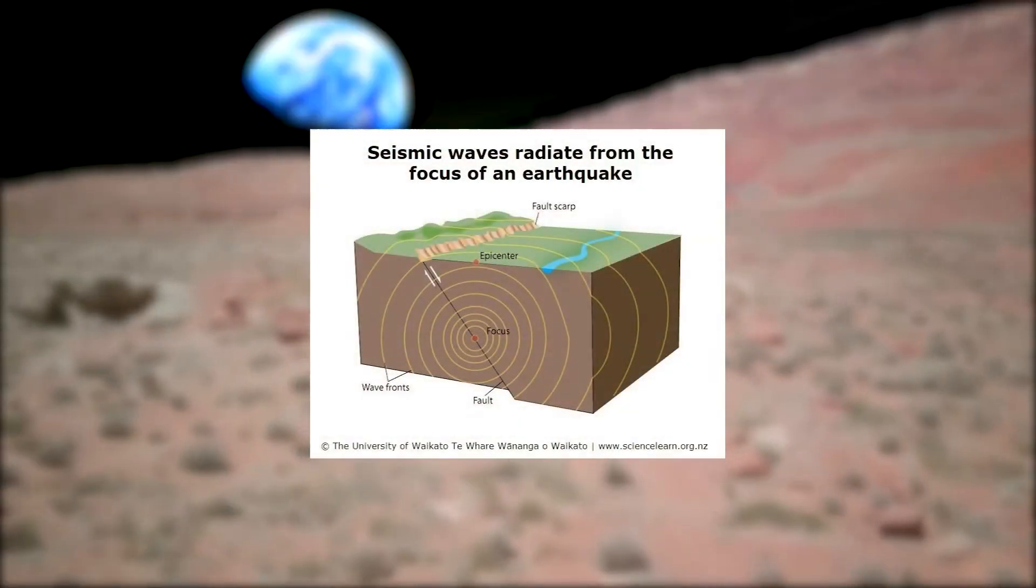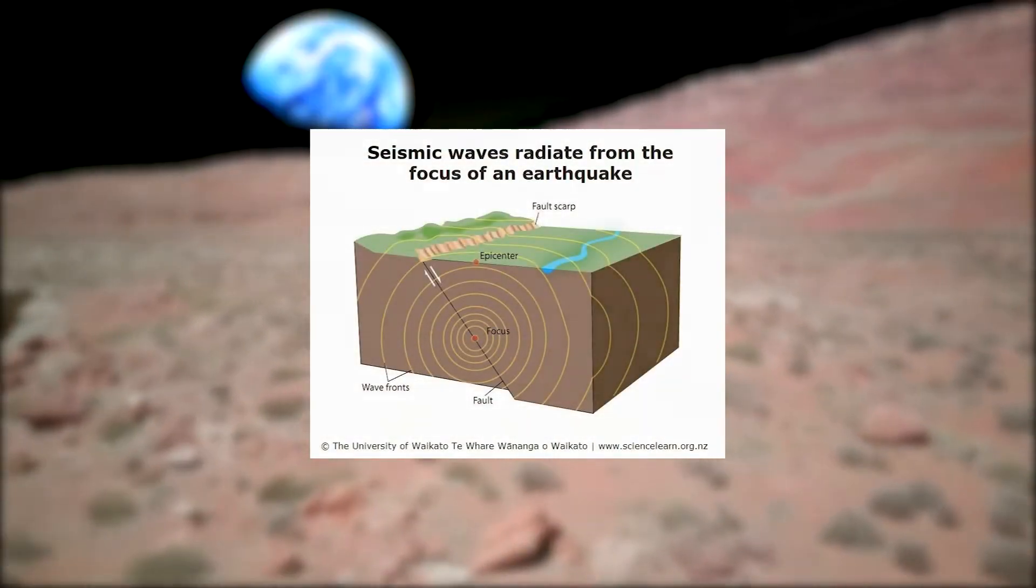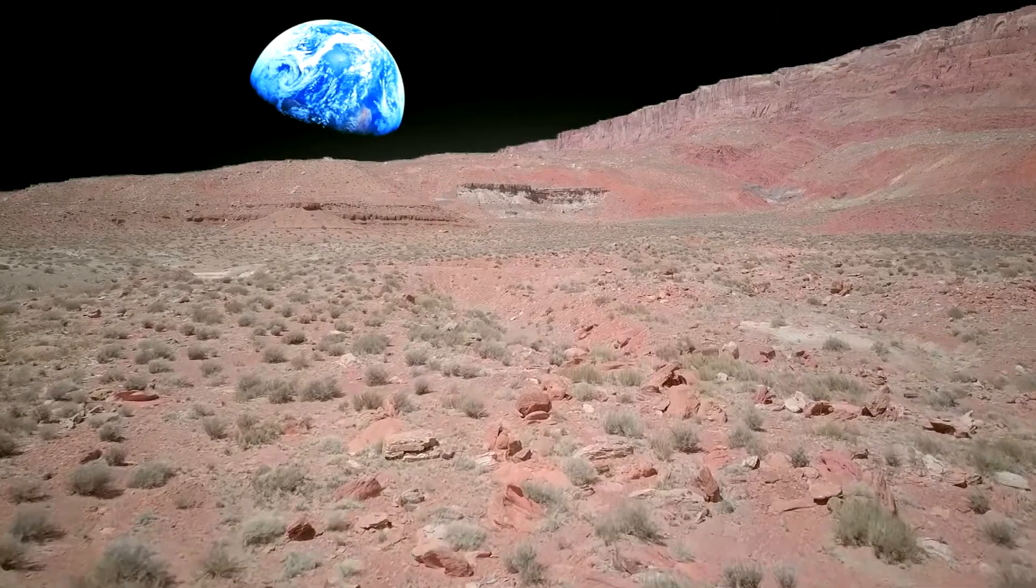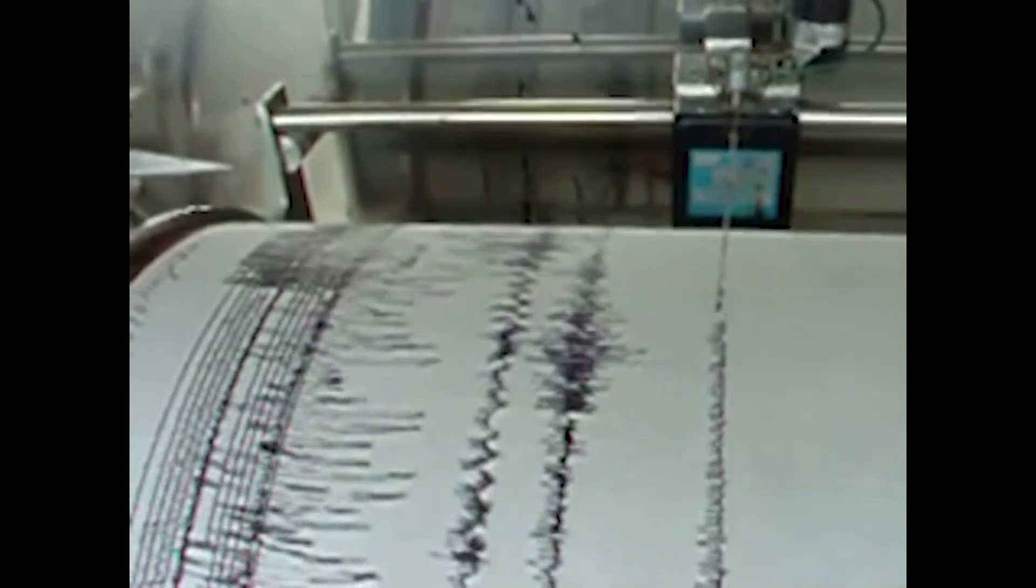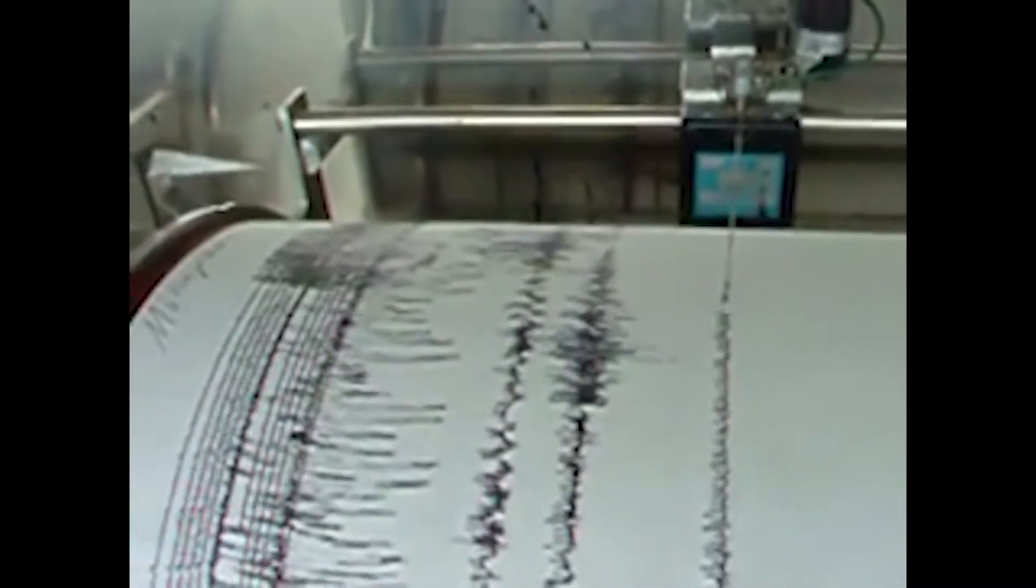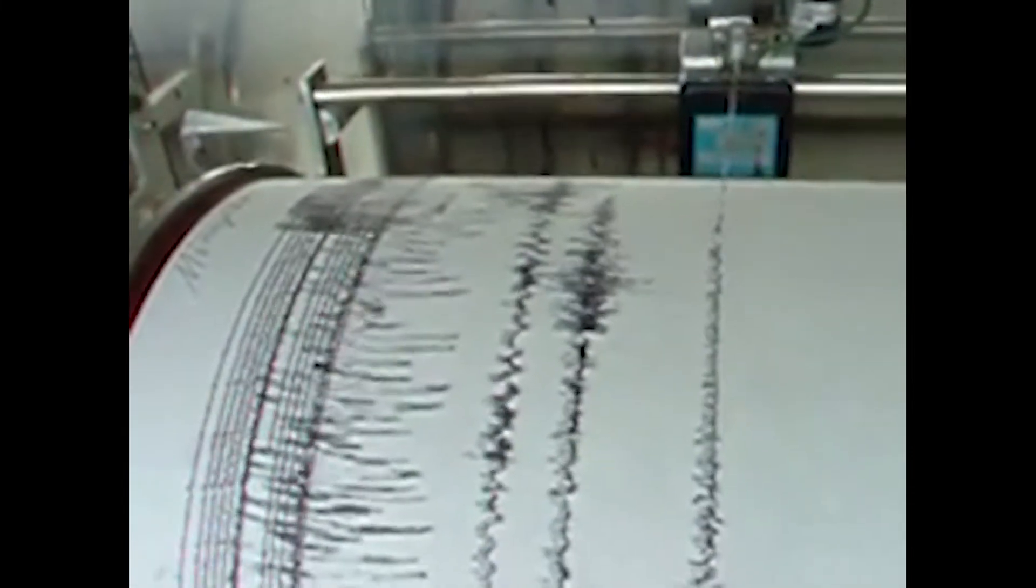Seismic waves are produced by earthquakes and travel into the Earth's interior, where they are dispersed and altered by formations deep within our globe. Seismograms, which are records of wave activity inside the Earth, capture these twisted patterns, allowing seismologists to obtain rare glimpses into Earth's inaccessible underworld.